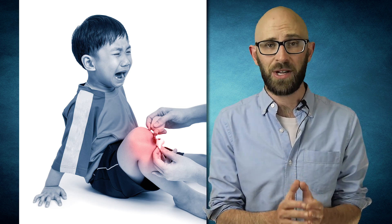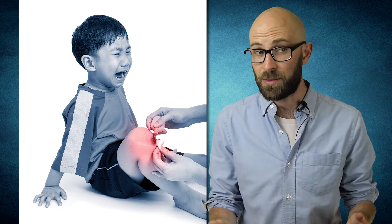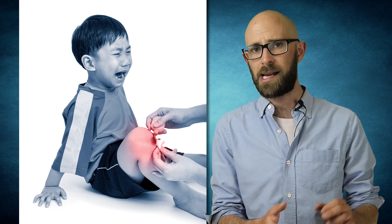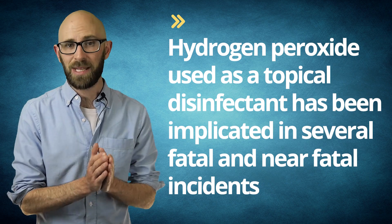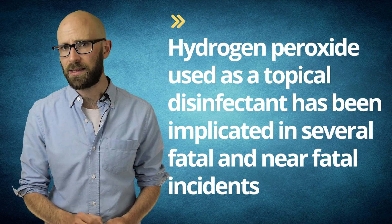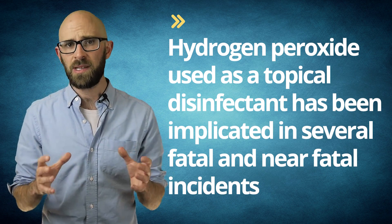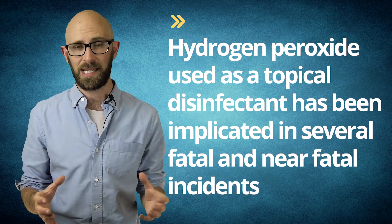This is all not to mention that if the oxygen gas produced by large amounts of hydrogen peroxide coming into contact with the catalase enters your bloodstream, it can circulate through your body, leading to countless medical problems like heart attack, stroke, or pulmonary embolus. While you might think that this couldn't possibly happen, hydrogen peroxide used as a topical disinfectant has been implicated in several fatal and near-fatal incidents due to this oxygen gas being introduced into the bloodstream.